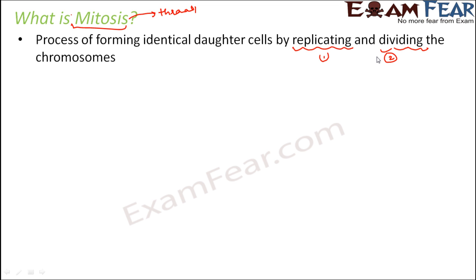Replicate the DNA and then divide it amongst the daughter cells. So here one parent cell will form two daughter cells which are exactly identical to the parent cell. It is somewhat similar to binary fission — there also the daughter cells were exactly identical — but we will see how it is different.